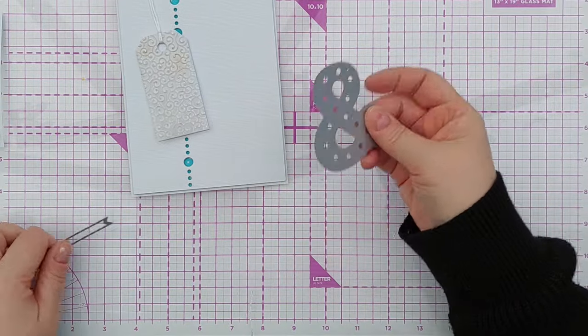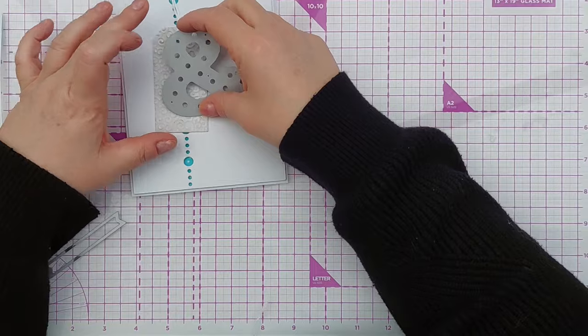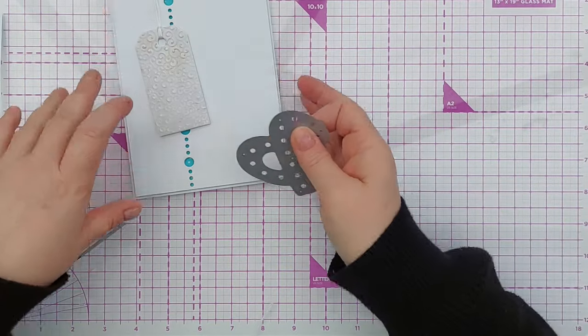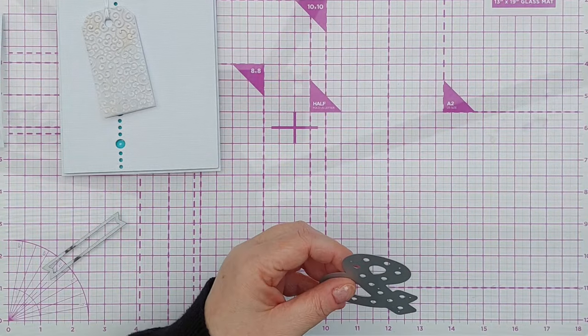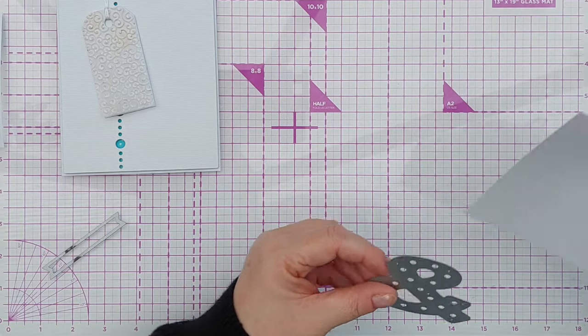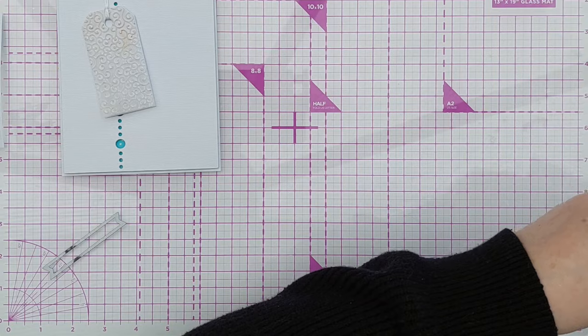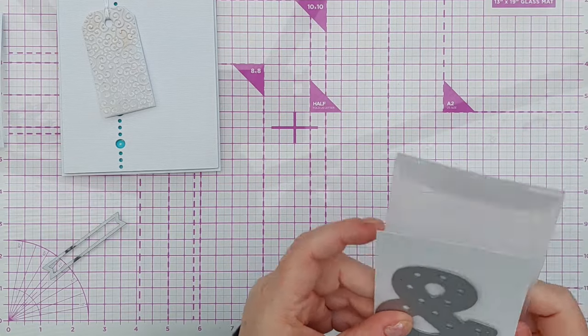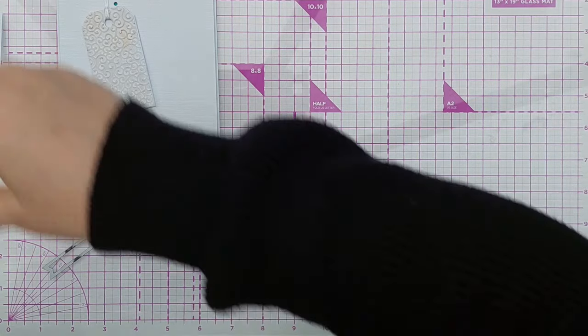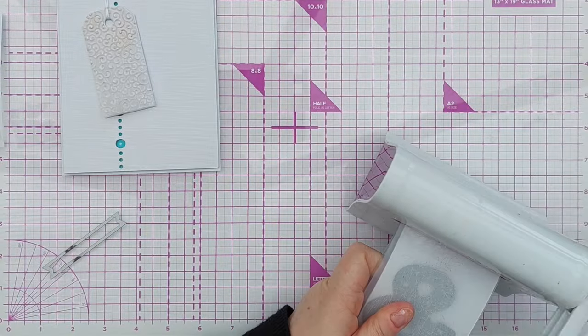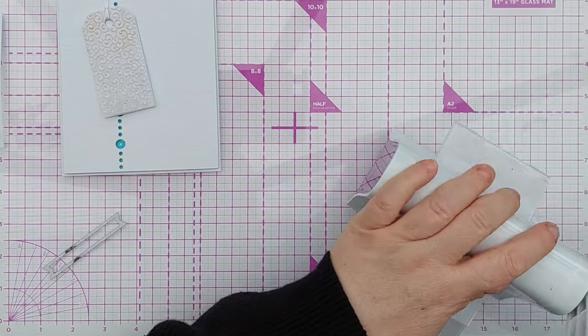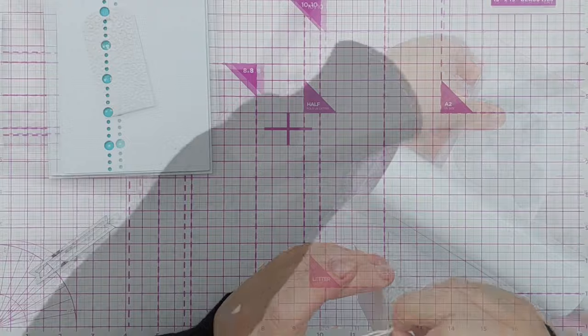As I was flicking through my dies I came across this ampersand die which I really love and I don't use it nearly enough. So I thought right we're using that so I just cut it out of white linen textured cardstock again. I did toy with the idea of adding some colour to the ampersand but in the end I decided to keep it white so that it stayed very clean and very simple.